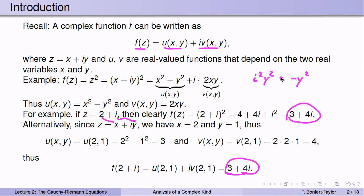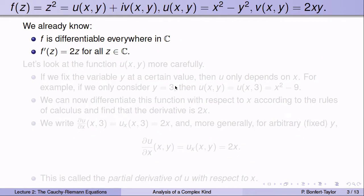These are two alternative ways of looking at the same function, and they'll become helpful when we examine the differentiability properties of u and v. We already know the function z squared is differentiable everywhere in ℂ, with its derivative being 2z for all z.